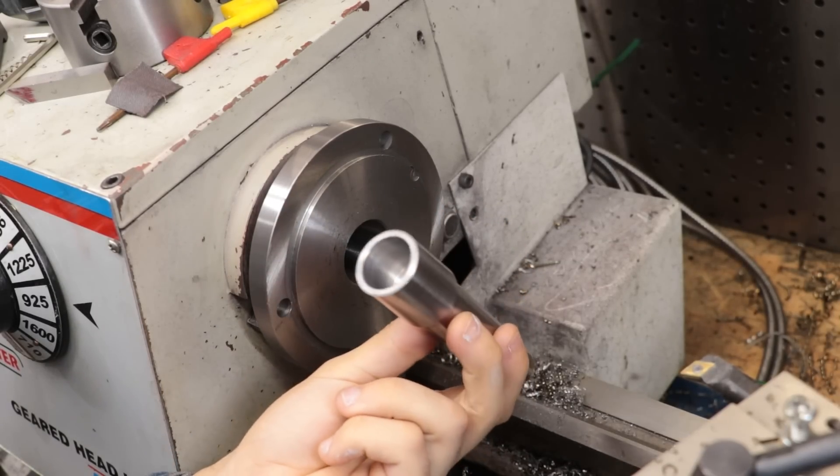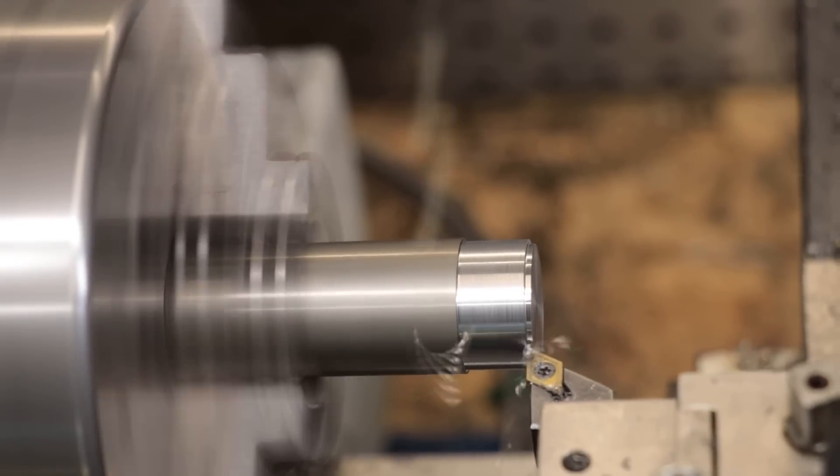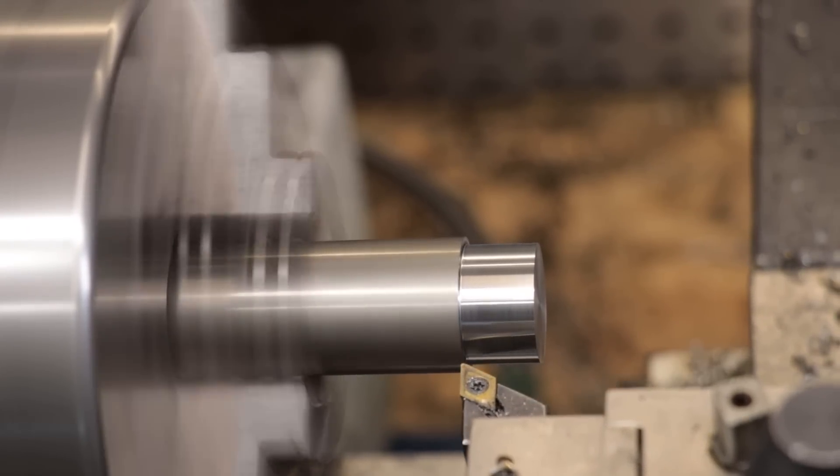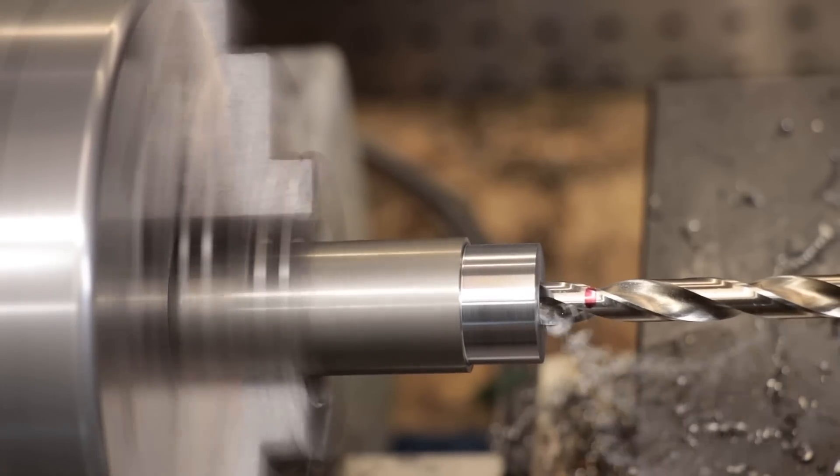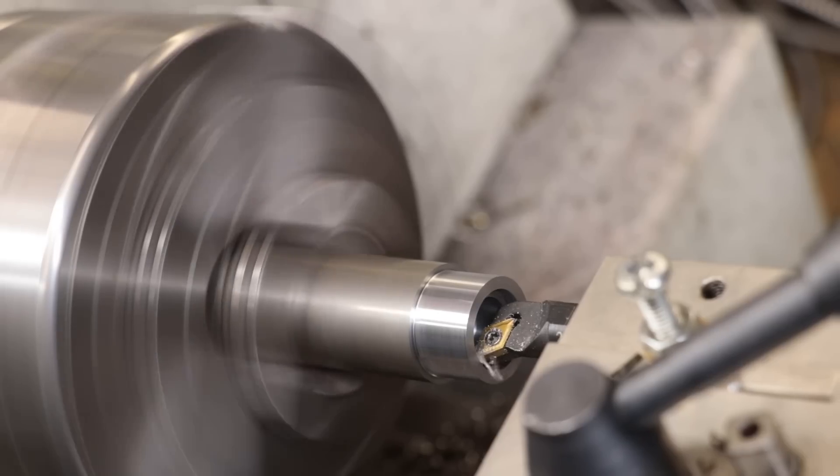That's the main housing now done, but there are still one or two other things left to make. The first thing I need to make is a spacer to keep the two bearings spaced apart. Making it should be quite straightforward - all I have to do is turn down a piece of steel to the OD of the ball bearings, bore out the center, and then part it off.